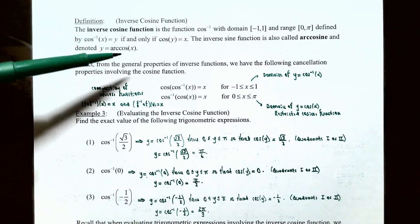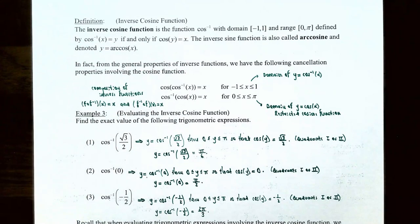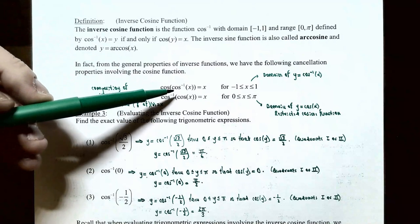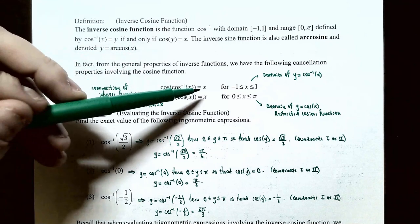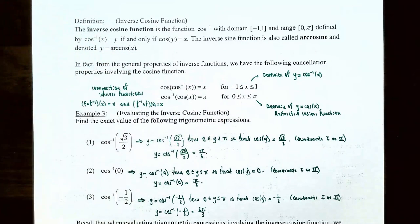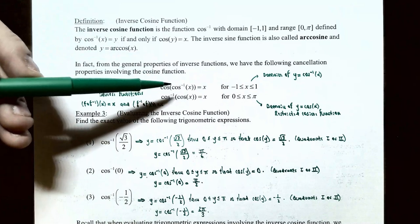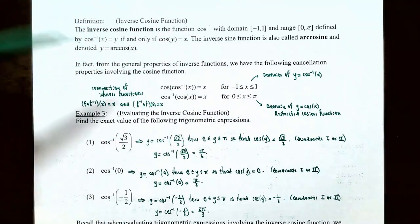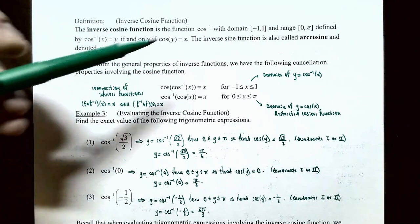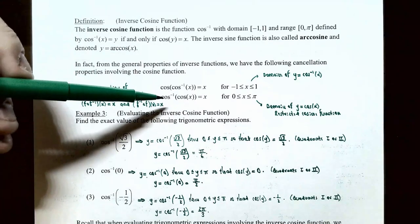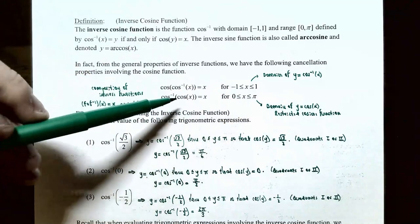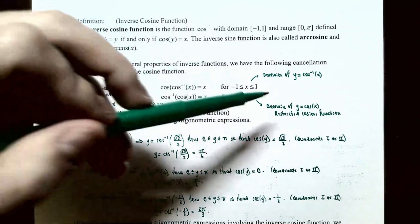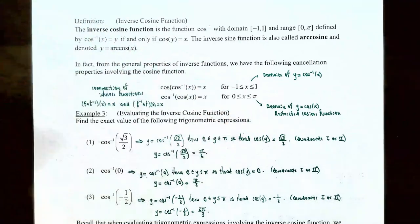From the general properties of inverse functions, we have cancellation properties for cosine. cos(cos⁻¹(x)) = x, provided x is in [−1, 1], the domain of the inverse cosine function. And cos⁻¹(cos(x)) = x, provided x is in [0, π], the domain of the restricted cosine function.